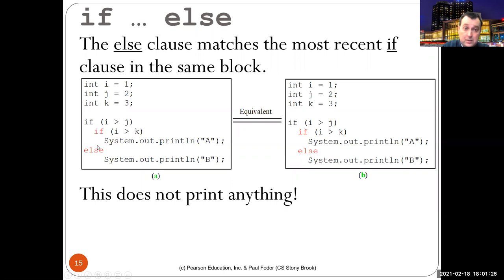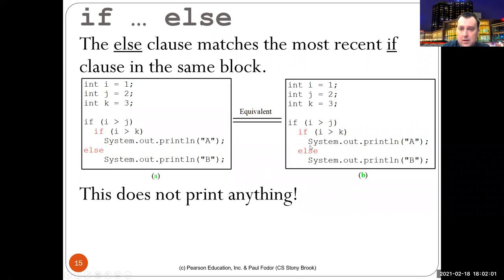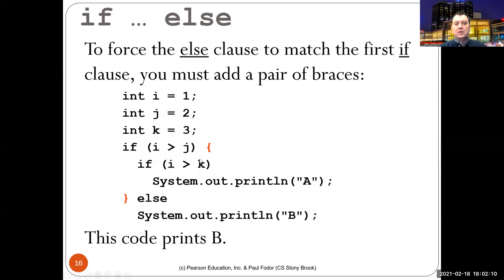Consider: i equals 1, j equals 2, k equals 3. If i (which is 1) is greater than 2, that is false. The else here matches the inner if — the one most recent in the same block — not the outer if. So this program prints nothing, because the programmer's indentation was misleading. If we actually want the else to match the outer if, we must enclose the inner if in a block, so the else and the outer if are in the same block. With that fix, since one is not greater than two, the else executes and prints 'b'.